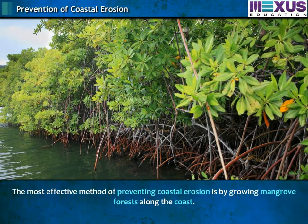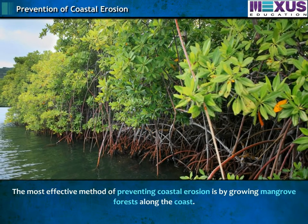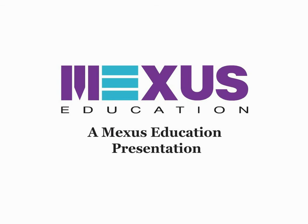The most effective method of preventing coastal erosion is by growing mangrove forests along the coast.